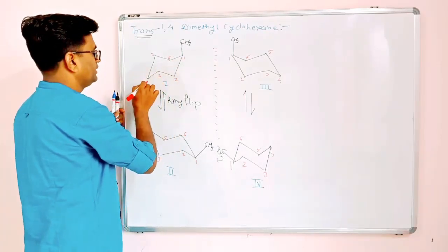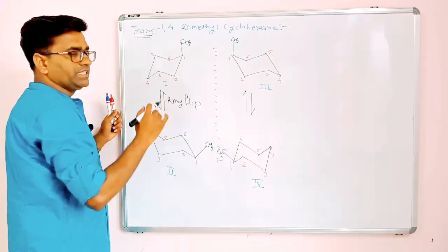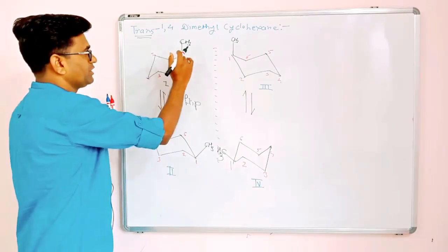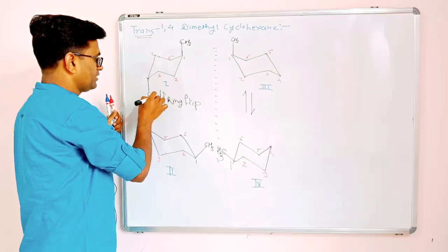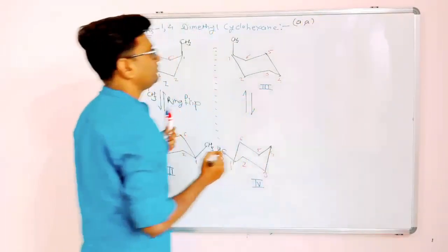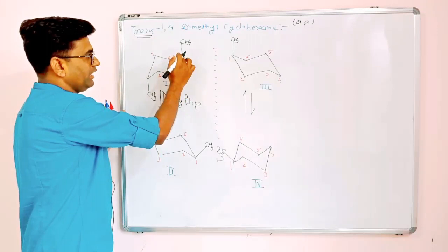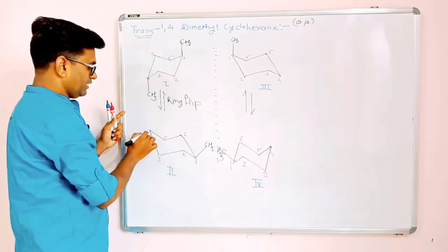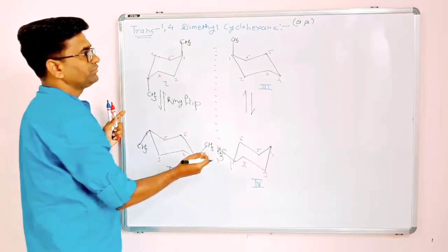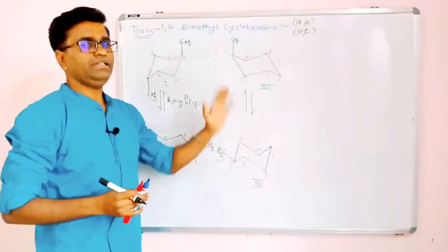For the fourth carbon — 1, 2, 3, and 4 — we write the second methyl. In trans form, both methyls are on opposite sides of the molecular plane of cyclohexane. If this methyl is up, the second methyl should be down, making it axial. So this is the axial-axial form. Upon ring flip, axial becomes equatorial, so the axial-axial form converts to the equatorial-equatorial form.